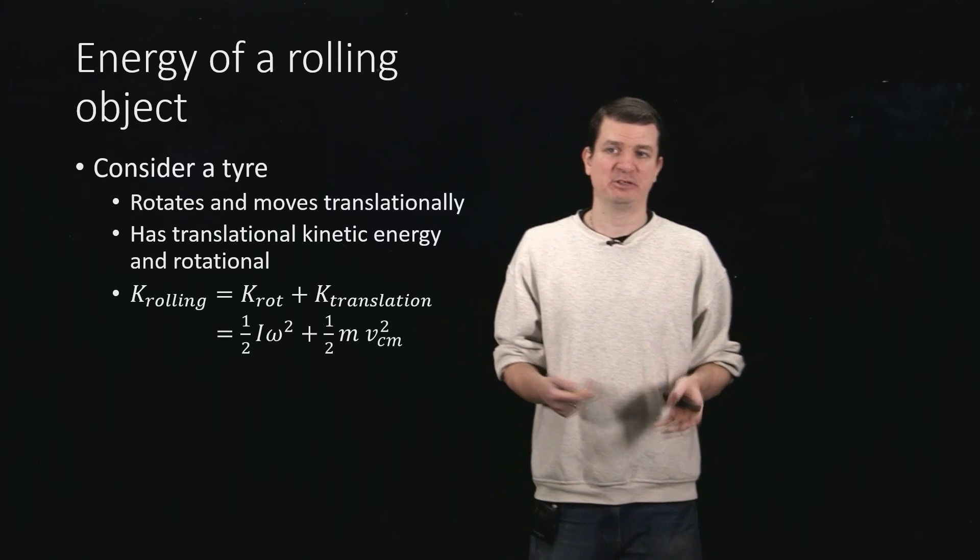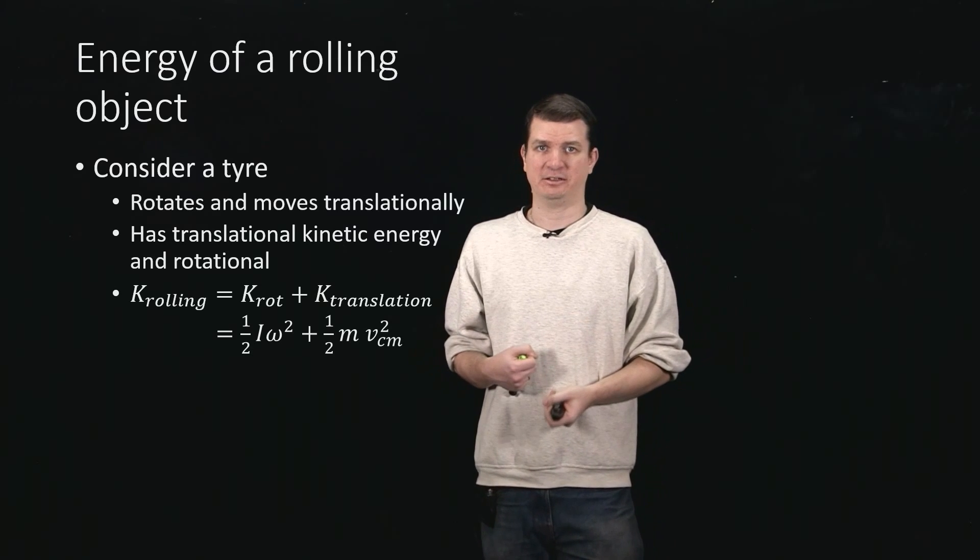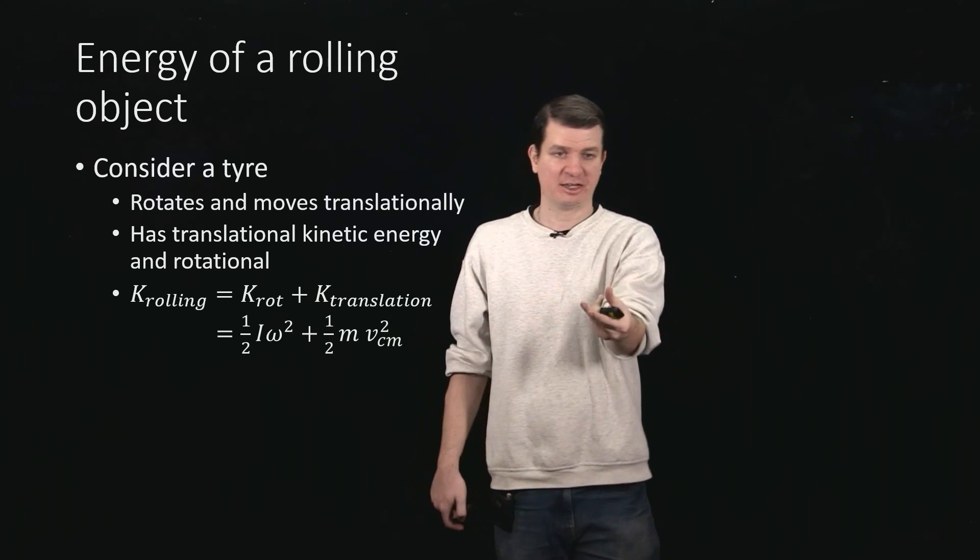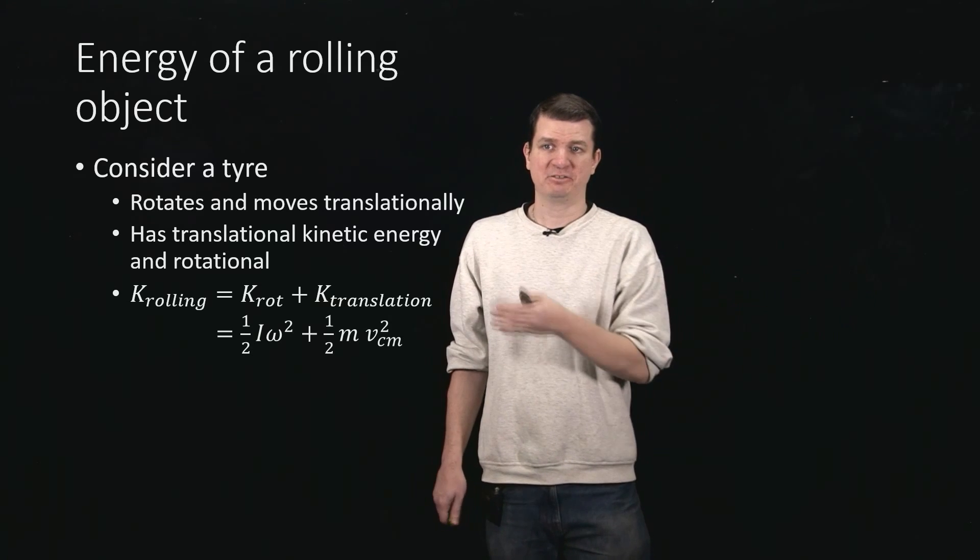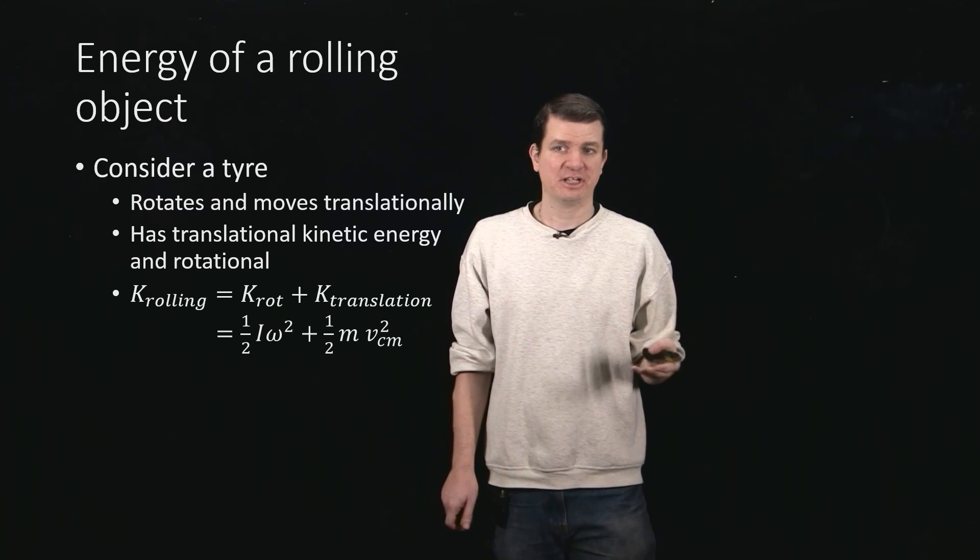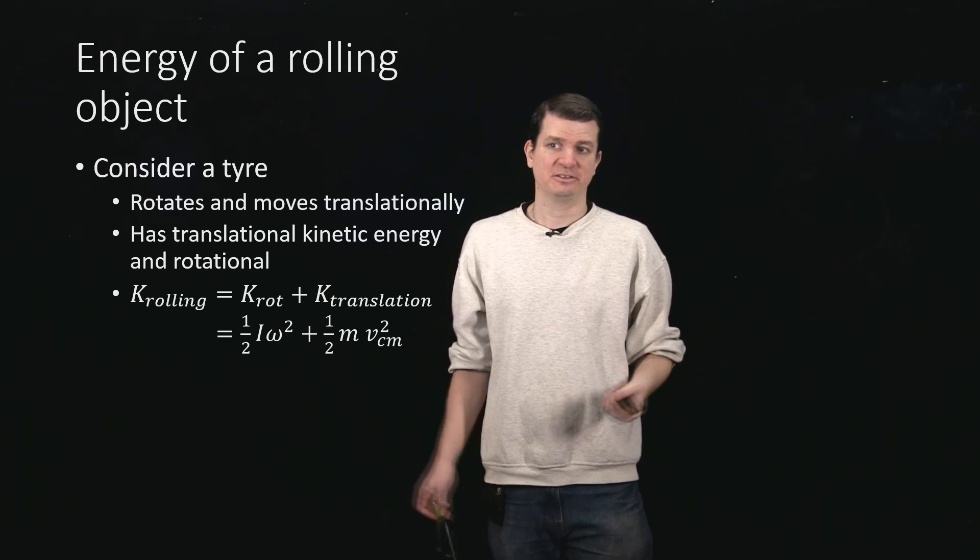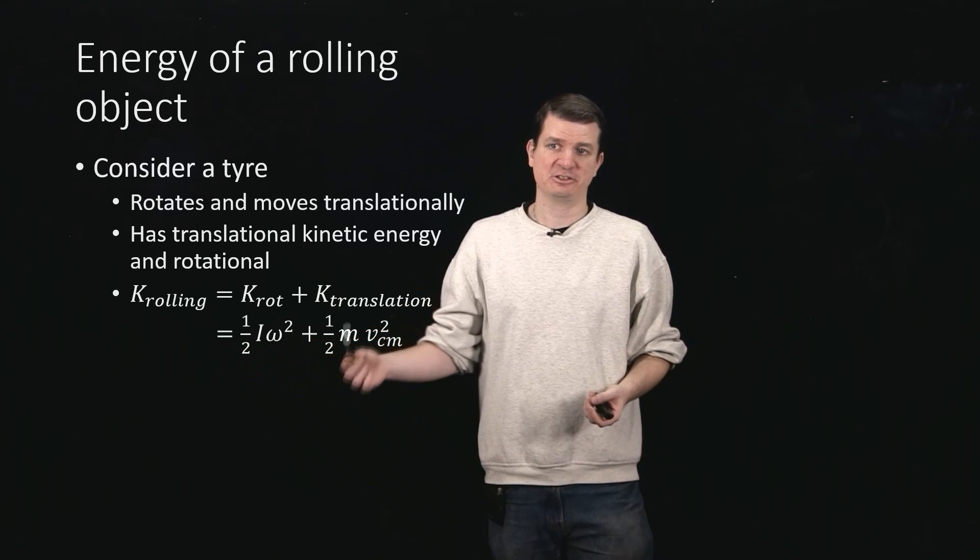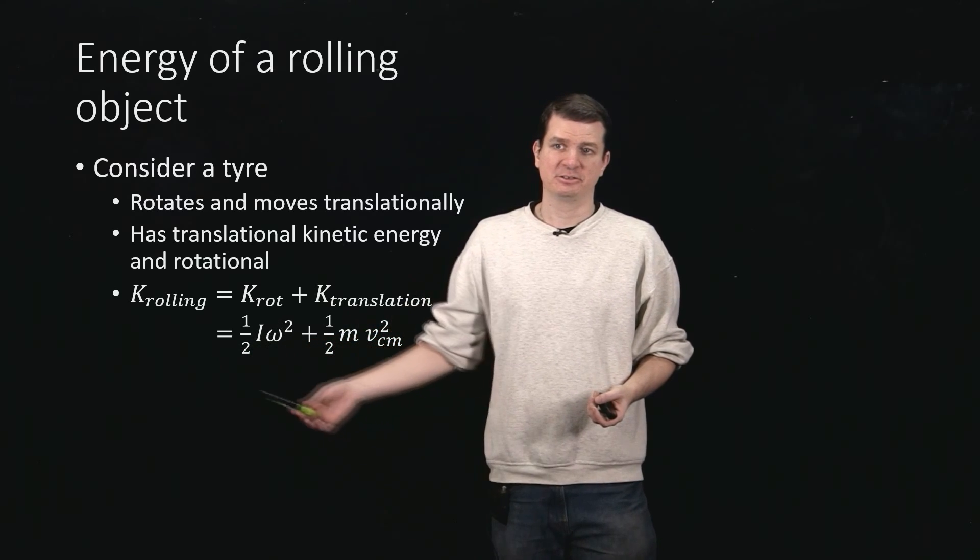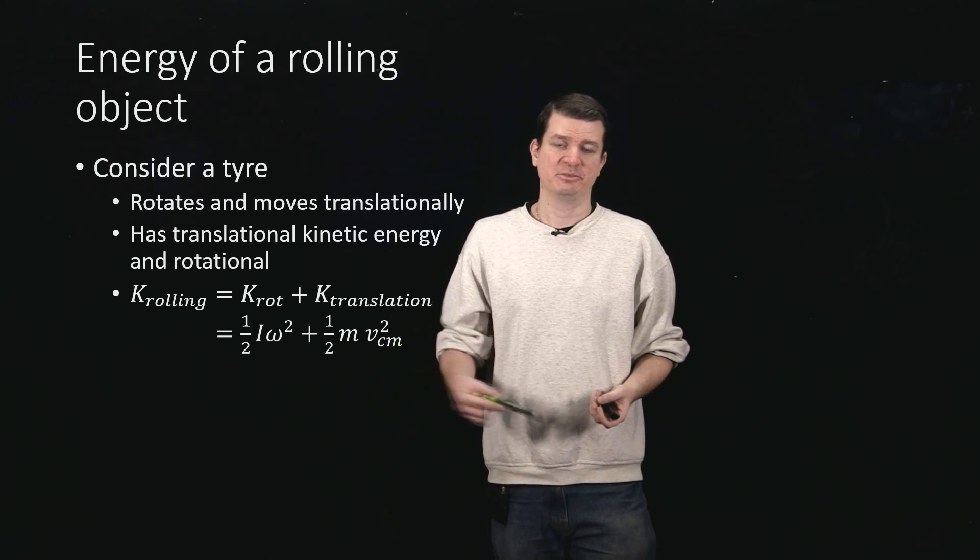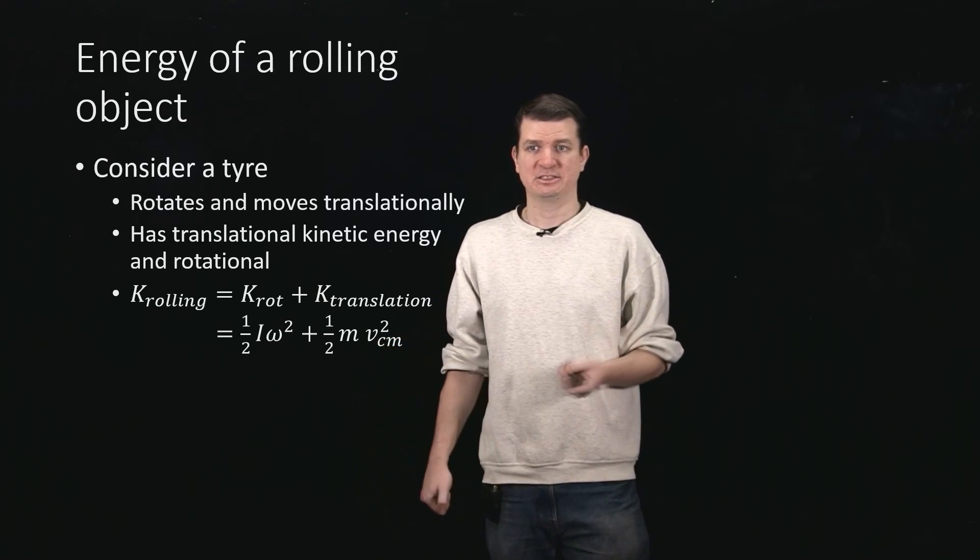So a tire or anything that's rolling actually has both rotational and translational motion at the same time. Which means we have to think both about its translational kinetic energy in the normal sense, one half mv squared, v describing how it's moving in a straight line, and you have to add in the rotational motion, which is the one half I omega squared. So you can write down that K_rolling is rotational plus translational: one half I omega squared plus one half m times the velocity of the center of mass squared.